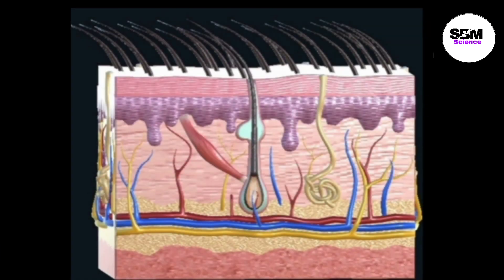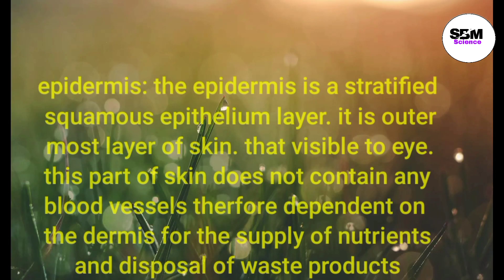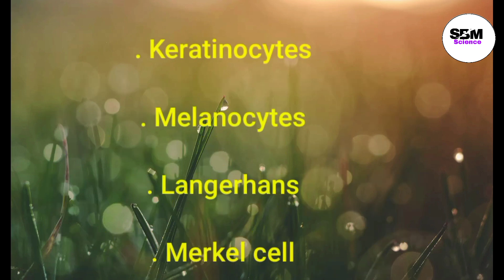Skin is composed of three layers: the epidermis, the dermis, and subcutaneous tissue. The epidermis is a stratified squamous epithelium layer. It is the outermost layer of skin that is visible to the eye. This part of the skin does not contain any blood vessels, and is therefore dependent on the dermis for the supply of nutrients and disposal of waste products.